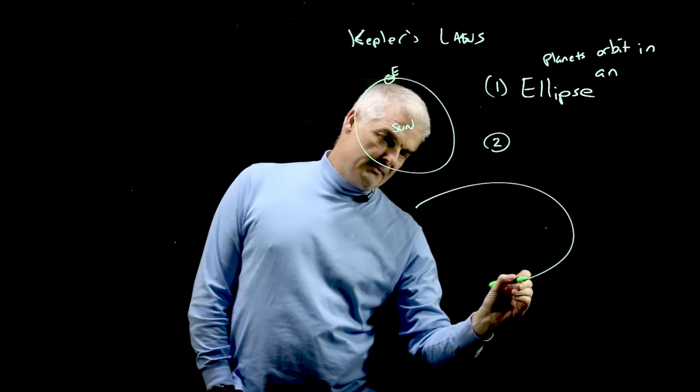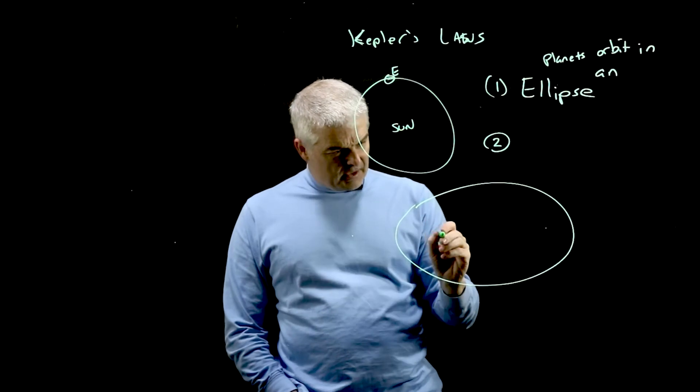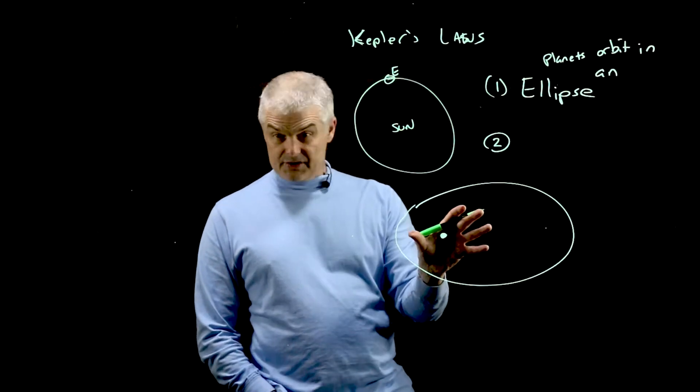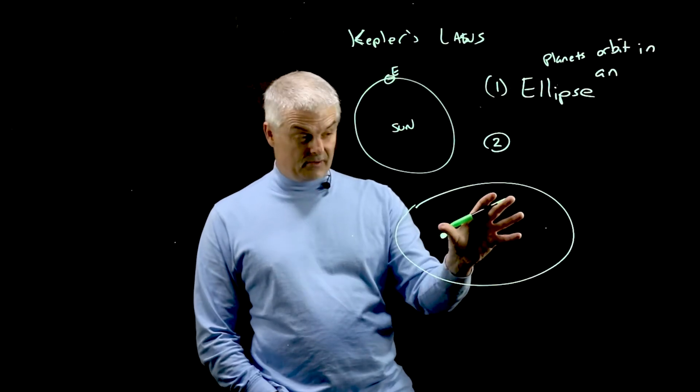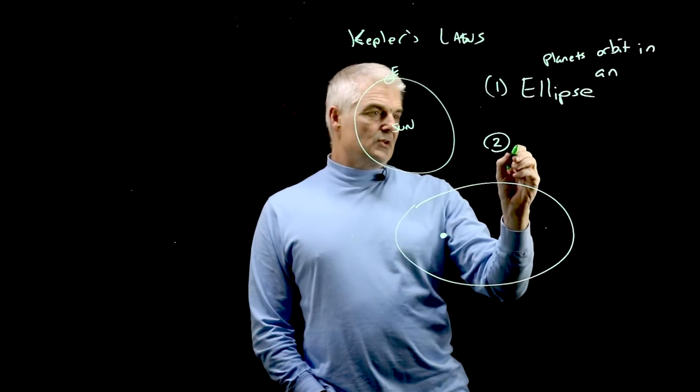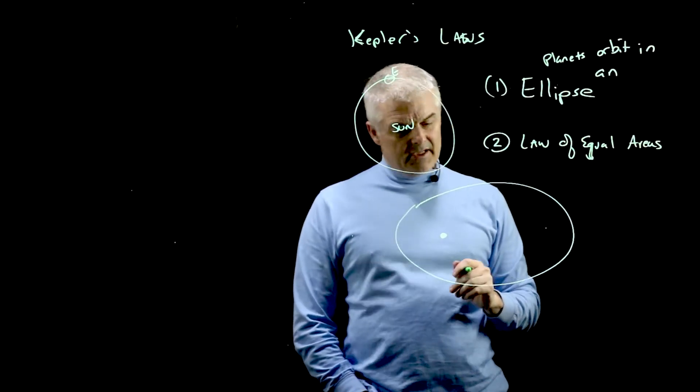So I'm going to try and draw an ellipse by hand because this is going to be important. So if this is an interesting thing, the sun is at this portion of the ellipse. Now, I'm overstating it because in the earth it's much more circular. It's not quite as elliptical as this. But this is, his second law is the law of equal areas.